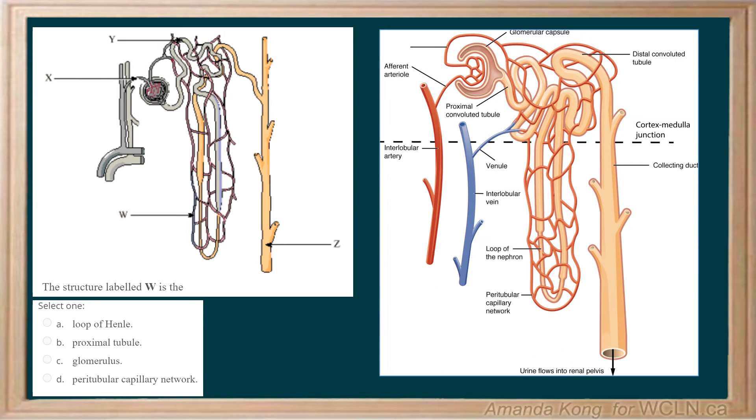As you can see in this diagram, we have Z, which is clearly the collecting duct, and then Y, which is right over here. Most likely PCT, proximal convoluted tubule. Actually, looking at it again, it is not the PCT, because PCT would be over here.